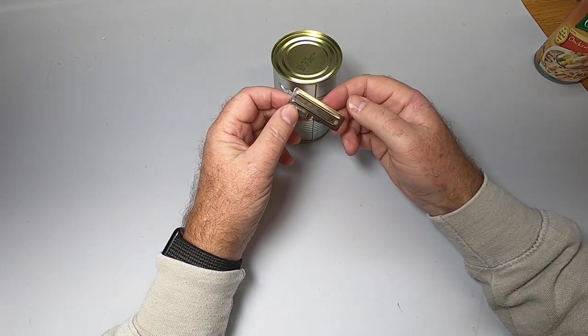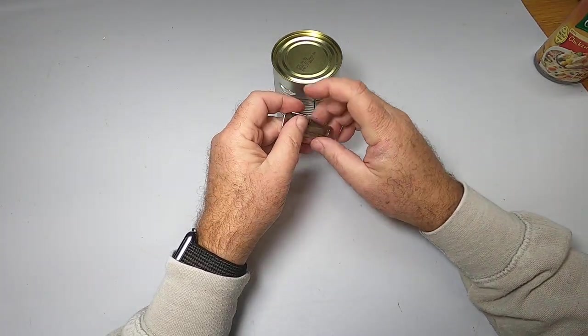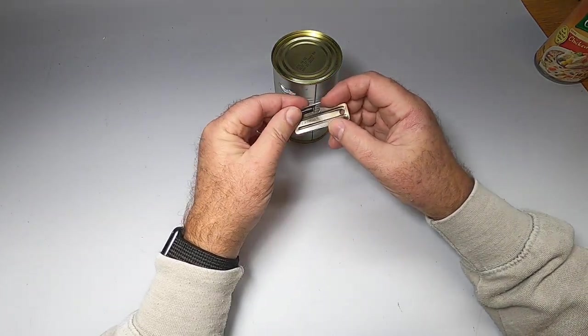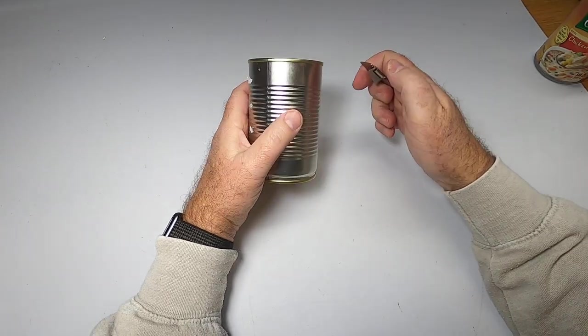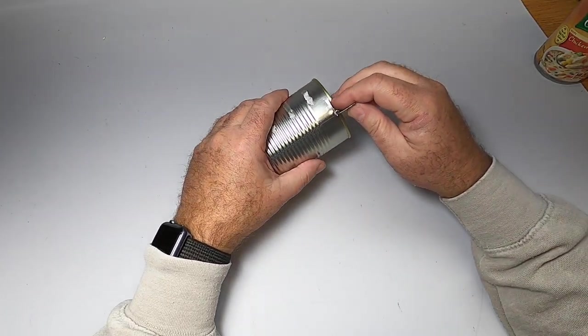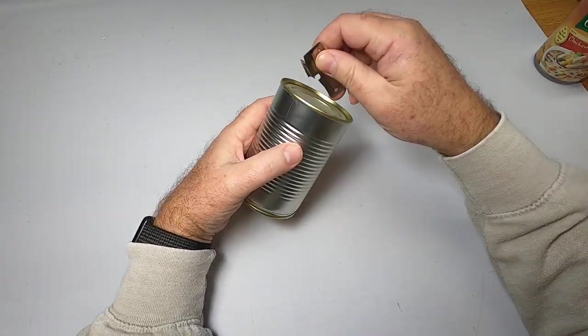I remember the actual GI issued ones were a little smaller than this, but this is an older one. I think it's probably a Coghlan's that I got at Walmart years ago. It's made in Canada. Anyway, I was watching YouTube the other day and one of my favorite YouTube people was opening a can with one of these and they did it this way.